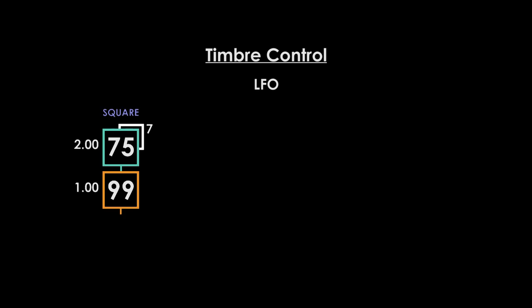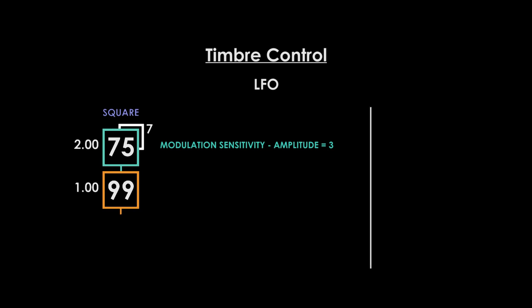We can apply the LFO to our modulator's output level to produce a repeating filter effect. Reset your square wave patch by reselecting it. Select the modulator, go to amp mod sensitivity, and enter a value of three — this determines how sensitive the operator is to the LFO AMD. Select AMD and slowly increase it from 0 to 99.